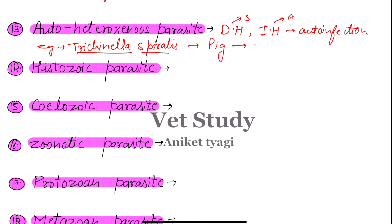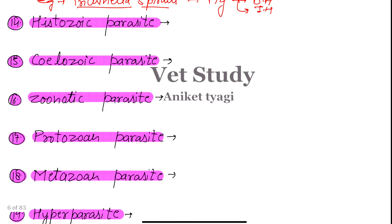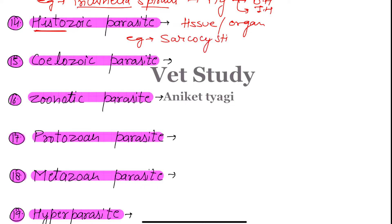Next we have the histozoic parasite. The word 'histo' is related to tissue or organ. So histozoic parasites are those parasites which are present in the tissue or organ of the host. Examples of histozoic parasites are Sarcocystis and Toxoplasma.